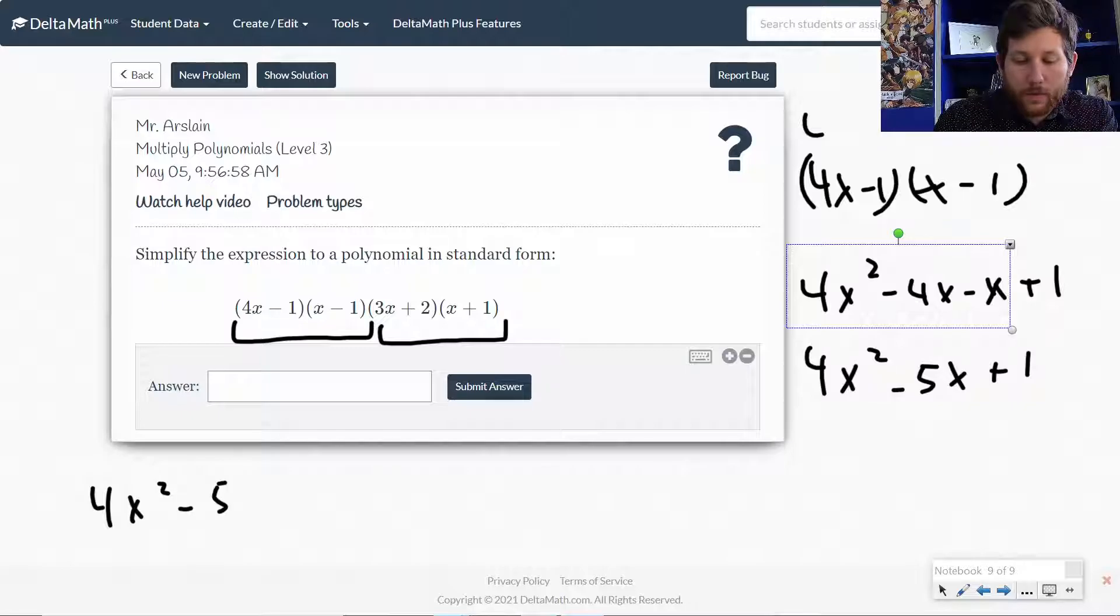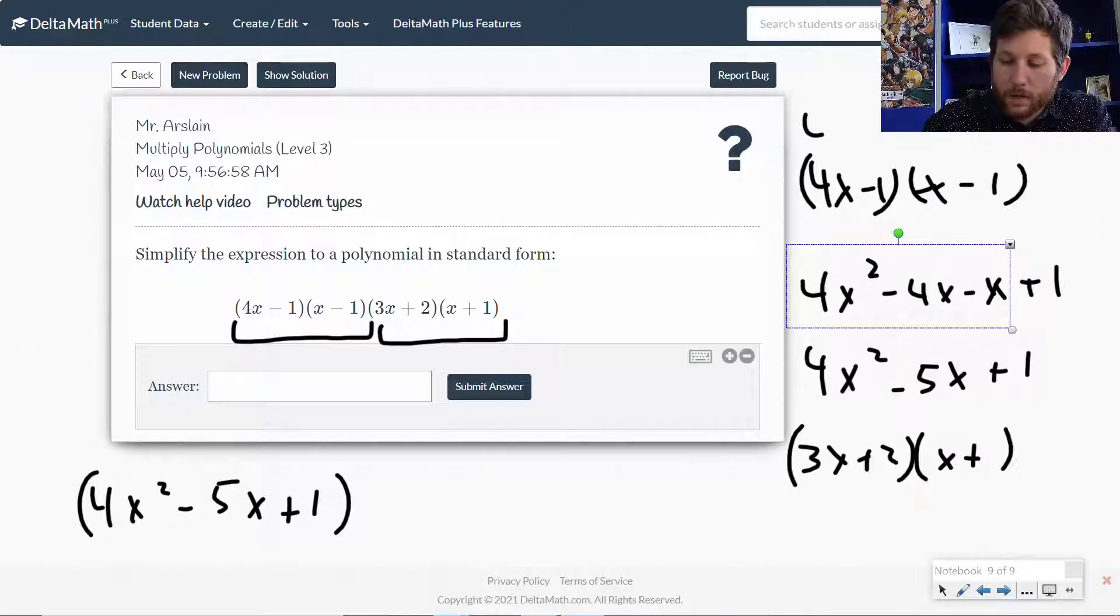So I'll put this over here for safekeeping, okay? And then let's go ahead and multiply the last two terms together. I get the 3x plus 2 times x plus 1.